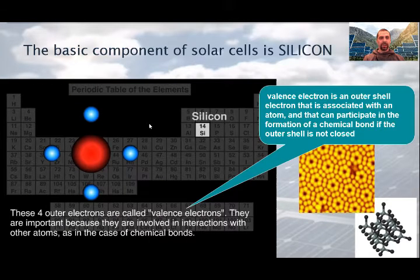These four outer electrons are called valence electrons. According to Wikipedia, valence electron is an outer shell electron that is associated with an atom and that can participate in the formation of chemical bonds if the outer shell is not closed. They are important because they are involved in interactions with other atoms, as in the case of chemical bonds like covalent bonds. On the right side, you can see the crystal structure of the silicon atom.